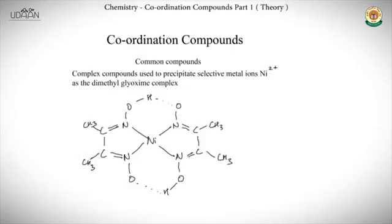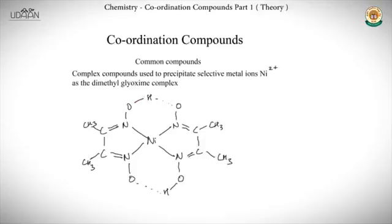Finally, some common coordination compounds are worth noting, though these are not frequently tested in JEE. One example is dimethylglyoxime (DMG), used to selectively precipitate Ni²⁺ as a DMG complex. Hemoglobin is another important structure to be aware of. These are covered for general knowledge, and with that, the theory for this chapter is complete — now we move on to questions.